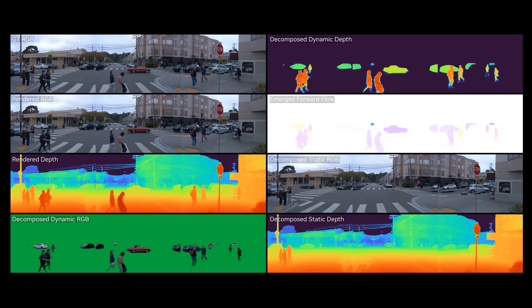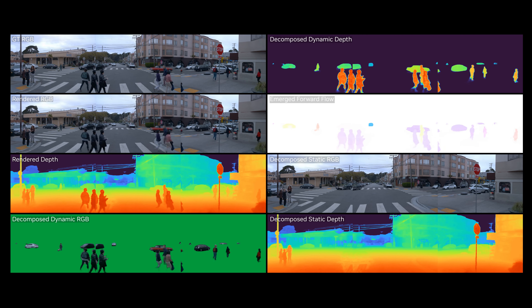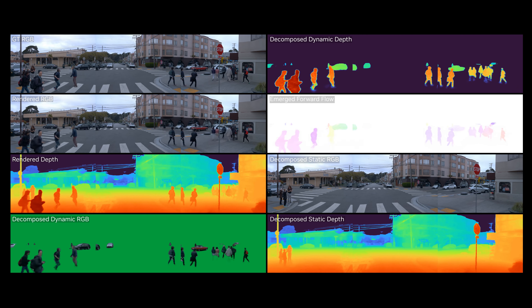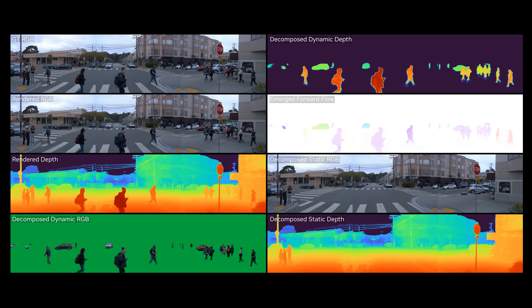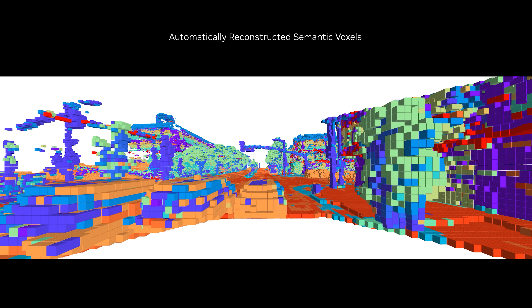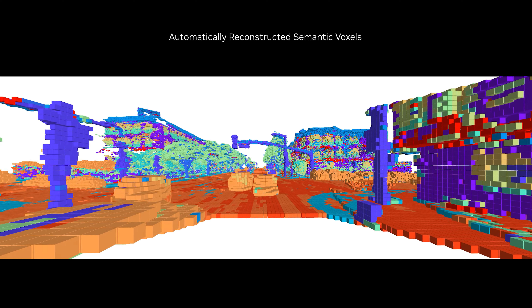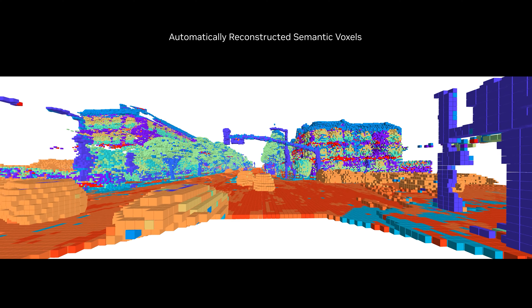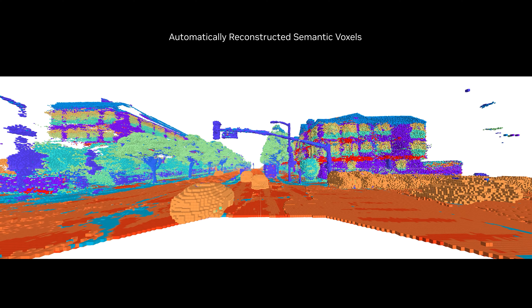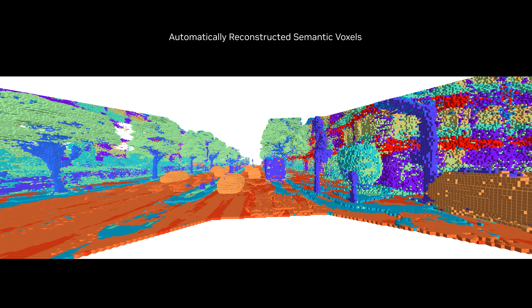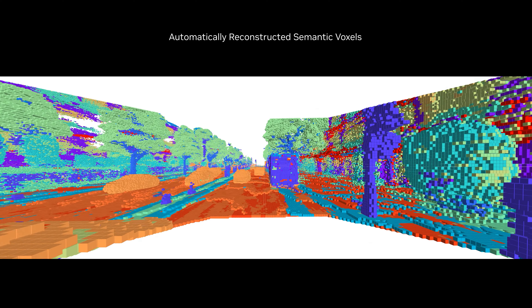EmerNeRF accurately reconstructs dynamic scenarios without the need for human supervision or external models. This enables reconstructing and modifying complicated driving data at scale, adjusting current imbalances in AV training datasets. In the future, watch for features of EmerNeRF to be integrated into NVIDIA's neural reconstruction engine roadmap.